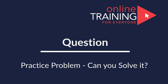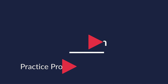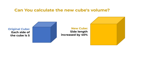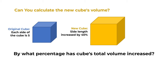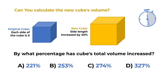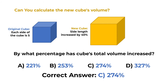Here's a practice problem: a 5×5×5 cube has its side length increased by 40 percent. By what percentage has the cube's total volume increased? You have four choices: A) 221%, B) 253%, C) 274%, and D) 327%. Give yourself a little bit of time, as the answer may not be obvious. The answer is choice C, 274 percent.